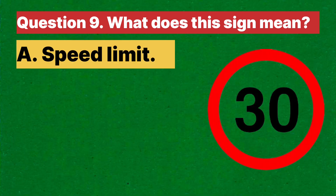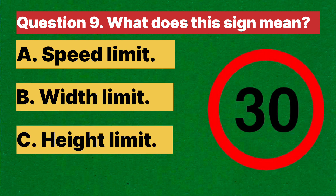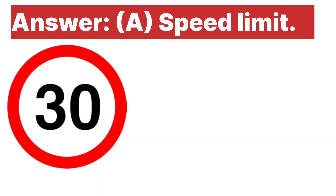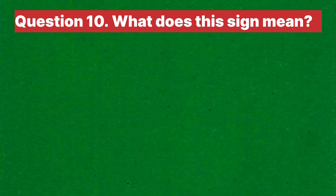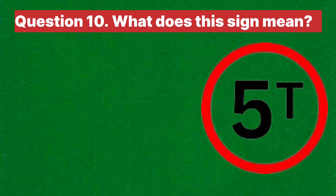Question nine: What does this sign mean? A. Speed limit. B. Width limit. C. Height limit. D. None of the above. Answer is A, speed limit. Explanation: this sign indicates the highest speed as specified in the sign for traffic on the road.